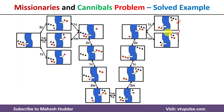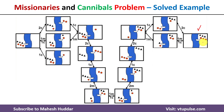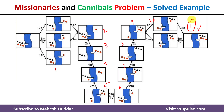From this state, we can bring two cannibals or one missionary and one cannibal to the right hand side, reaching the final state where all three missionaries and three cannibals are on the right side of the river. Counting all the moves: first, second, third, fourth, fifth, sixth, seventh, eighth, ninth, tenth, and eleventh. Out of the branching possibilities, only one path is executed at each step, so the total number of moves required is 11 to bring all missionaries and cannibals from the left side to the right side of the river.